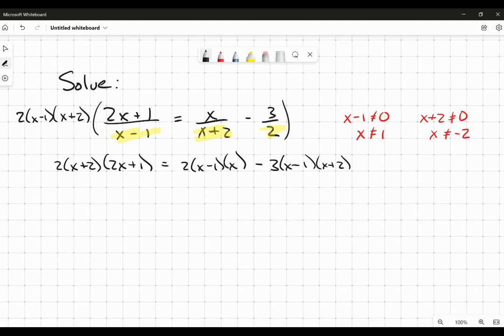I got a little bit of work to do here. I got to expand this all out. So I'm going to focus on expanding the binomials here. x times 2x is 2x squared, x times 1 is x, 2 times 2x is 4x, 2 times 1 is 2. Then here, this is going to be x squared minus x and minus 3. And this is going to be x squared plus 2x minus x minus 2.